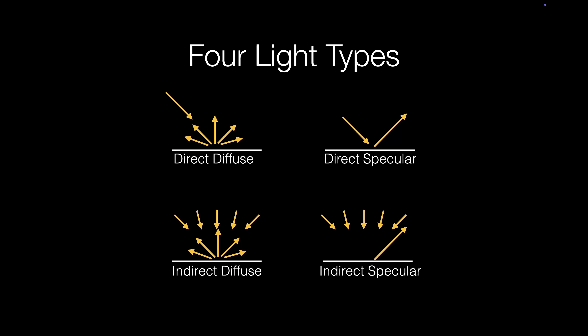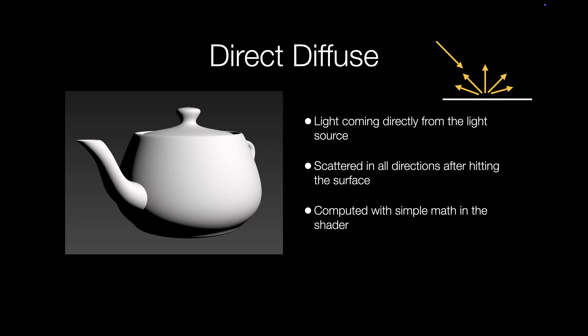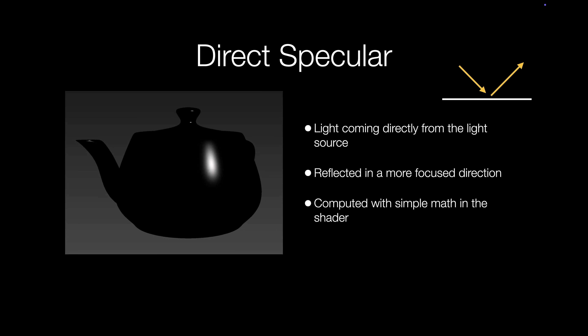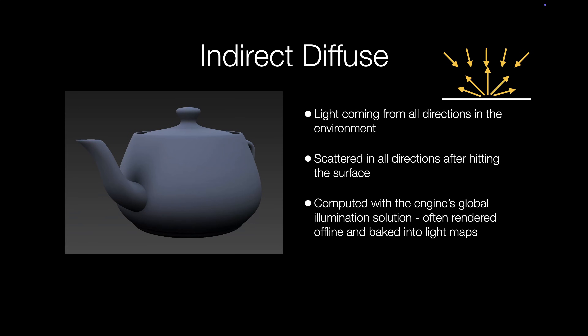Let's take a look at some example images. This is what direct diffuse looks like. It's the most simple type of light that the engine calculates. Notice that the lighting is very broad across the surface and that there are areas facing away from the direct light source that aren't lit at all. Here's an example of direct specular. While it's slightly more expensive to compute than diffuse, it's also very cheap comparatively speaking. Notice that the lighting is very tightly focused — it's basically a reflection of the light source shining on the surface. Next is indirect diffuse. It's the most complex to calculate because it's modeling the behavior of billions of light rays bouncing around the scene. Because of the expense required, this type of light is often rendered offline and stored in light maps or light probes.